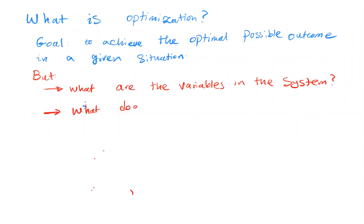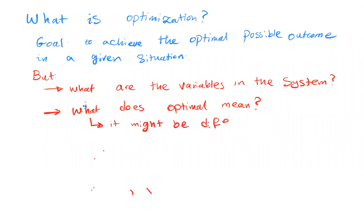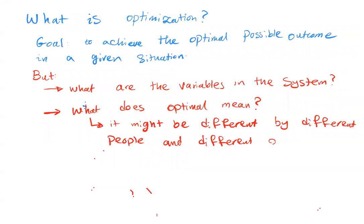Second, what does optimal mean? So when we talk about optimizing, what do we mean? Is it going to be minimizing something or is it going to be maximizing something? That's another question we want to answer. The answer may be different for different people and different objectives.